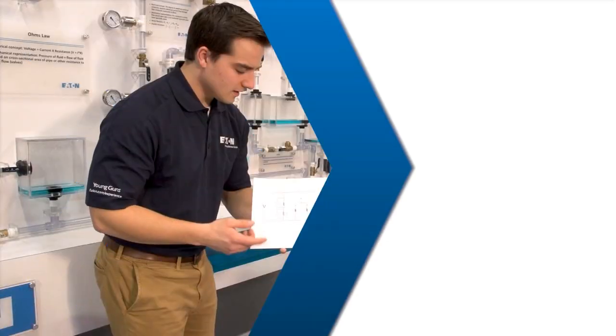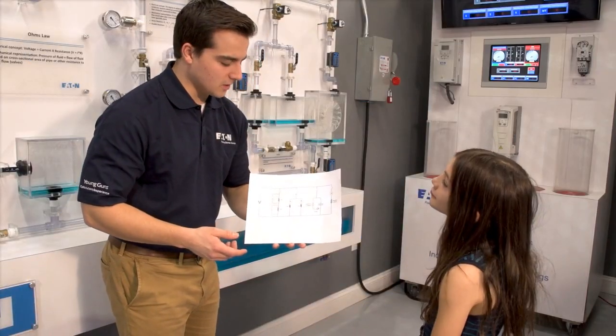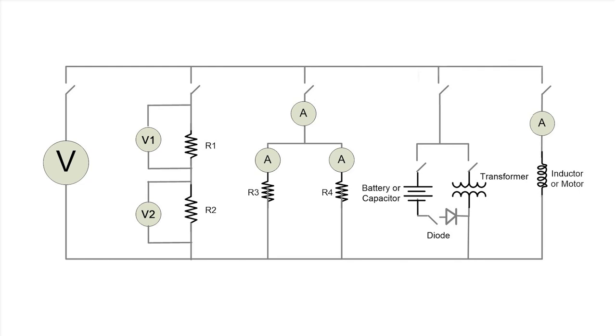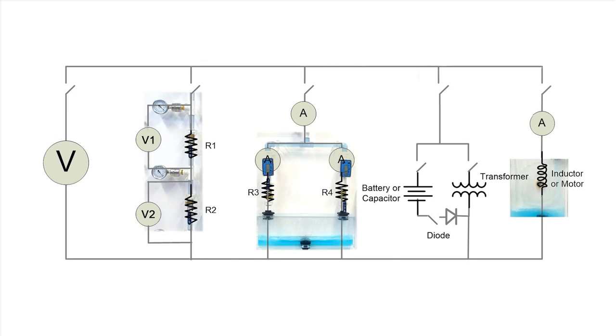We use these switches. Kendall, this is what we call a one-line diagram. It summarizes everything we saw today in the water analogy. And you can see things like the resistors and the inductors and the transformer — remember all those?